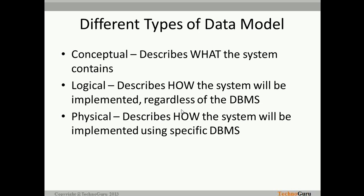What are the different types of data model? Basically there are three types: first is conceptual, second is logical, and third is physical. The conceptual data model answers the question: what does the system contain? The logical data model describes how the system will be implemented regardless of DBMS — so if you are using different types of databases, your logical data model will always work across each type. Then the physical data model describes how the system will be implemented using a specific DBMS.